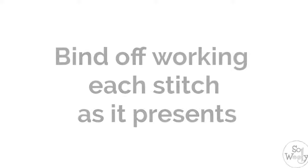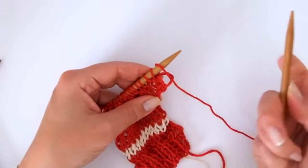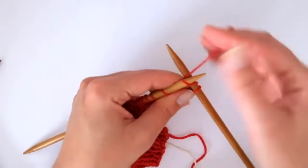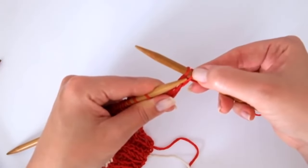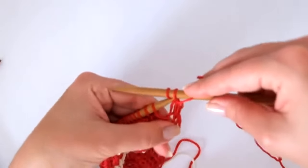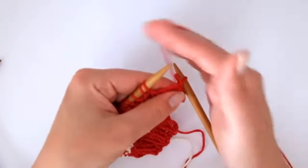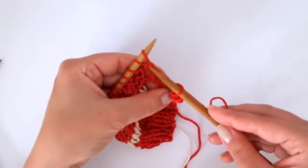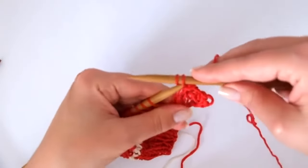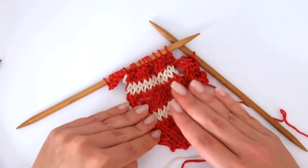Now we are going to bind off working each stitch as it presents. I started the row with knit 2, so I am going to knit 1, knit the next and pass one stitch over the other. Now I see the bump — I purl 1 and pass the stitch over. Purl the second and pass the stitch over. Now I see knit 2: knit the first, pass the stitch over, knit the second, pass the stitch over. Keep repeating until you have finished and repeat the process for the other part.